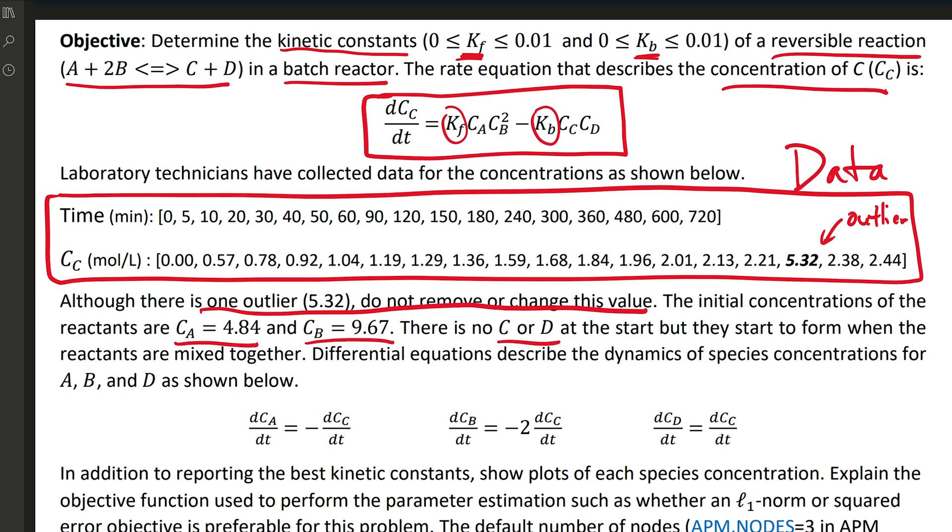We have initial concentration of A and B listed there. There's no C or D at the start, but they form when the reactants are mixed together.